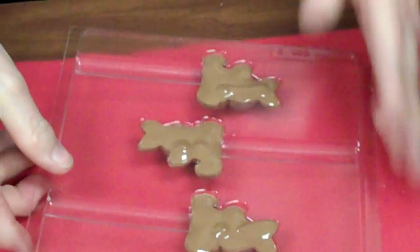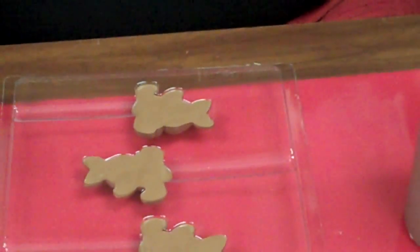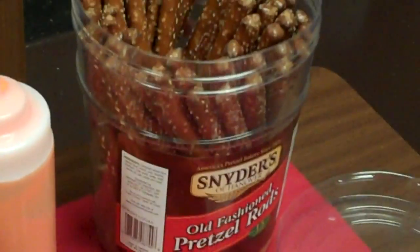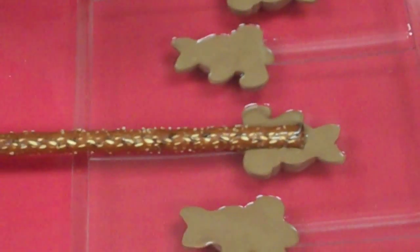Now we give this a little tap. Just like that. And I have the pretzel rods over here. I always buy them in the canister because there's less breakage on them. And you just take this pretzel and you place it down in there.